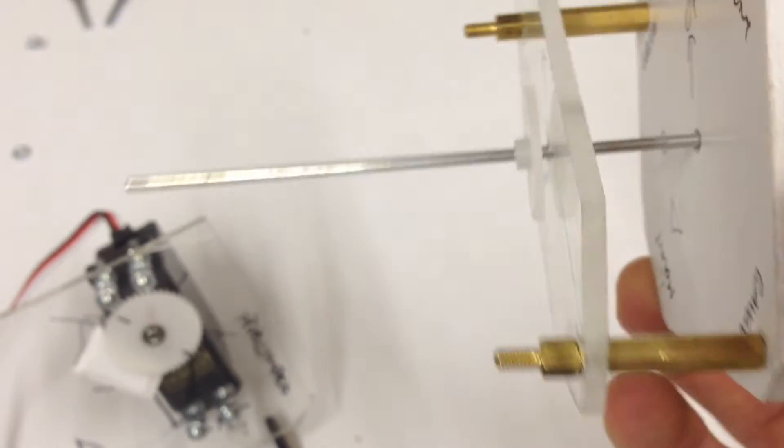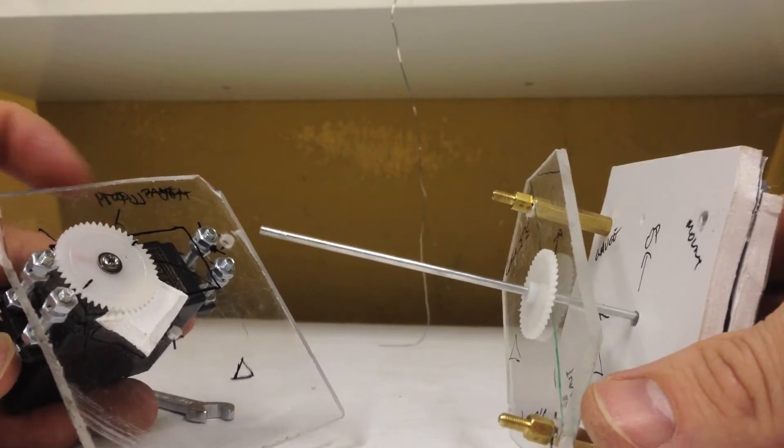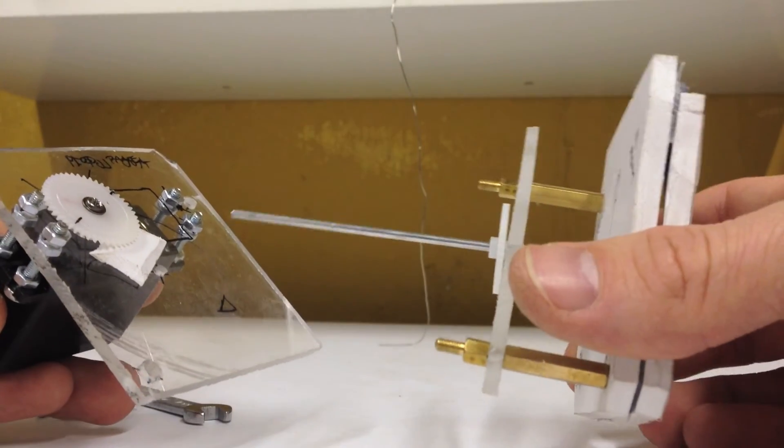Here on the back side, this plexiglass plate here with the gear goes on the servo engine and makes sure the plexiglass plate doesn't move too much.